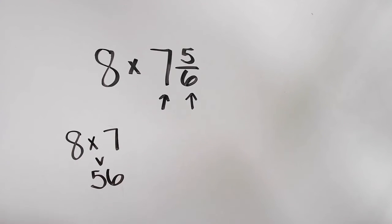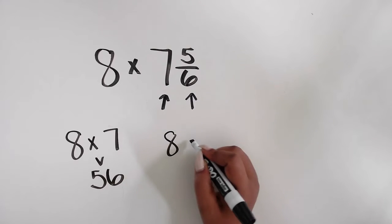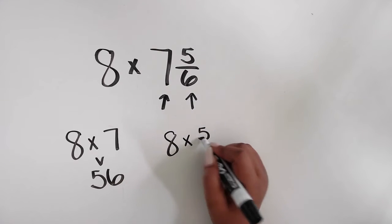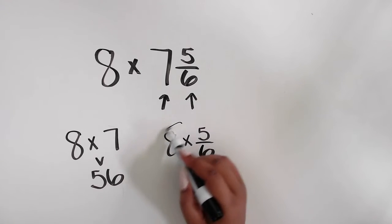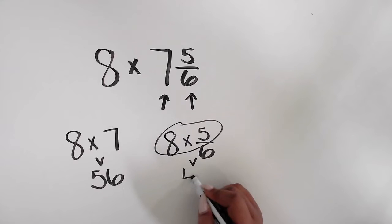The next part is multiplying the 5/6. So 8 times 5/6. Think of it as 8 groups of 5/6 or just 8 times 5. That equals 40.